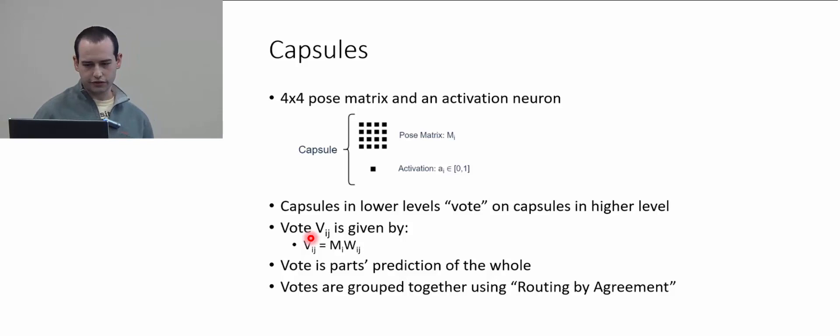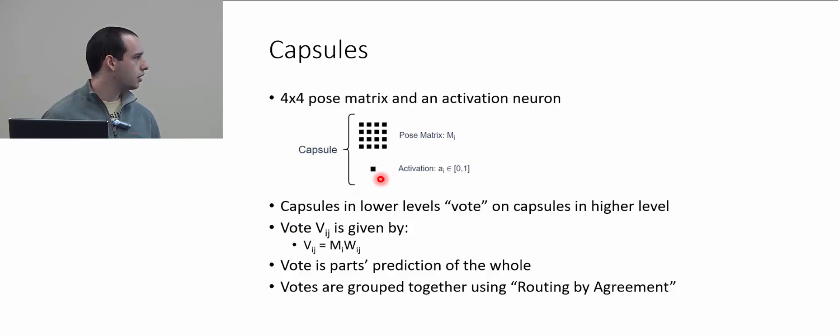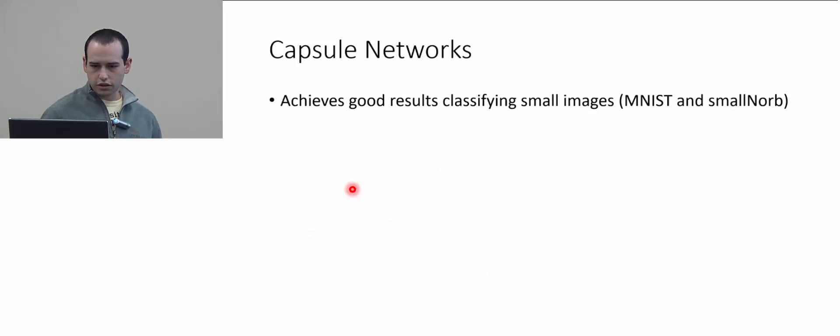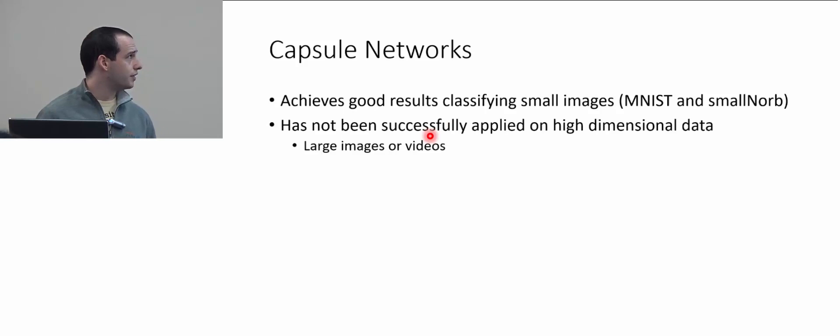These votes are grouped together by routing by agreement. We use an EM routing algorithm, which tries to find similarities within the votes. If votes are more similar, the activation is closer to one for the next layer; if less similar, the activation is closer to zero. Prior to this work, capsule networks were shown to have good results on MNIST and smallNORB — small image datasets for classification.